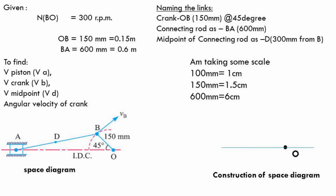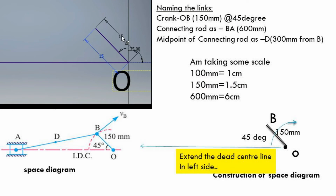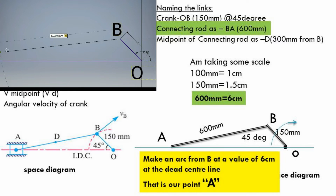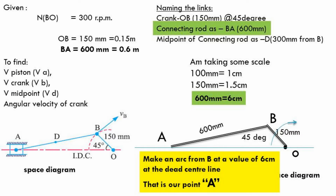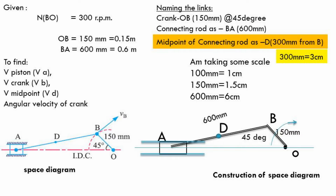The crank has an angle of 45 degrees with respect to the dead center line. We need to draw the crank at 45 degrees — I am going to choose the left side orientation. Now, mark the point B. Just extend the dead center line so that we can find the piston in the correct place. Take 6 cm in compass, and from B, make an arc at the dead center line. That intersection point will be our point A. Now draw a piston symbol at point A, along with the guideways. Also, mark the point D — that is 300 mm from point B. This is the space diagram for the given input.